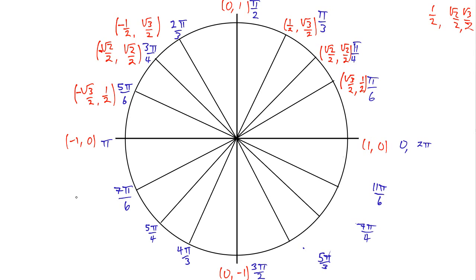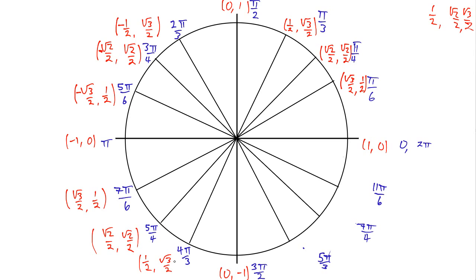In the third quadrant, for the pi over 6 point we have (square root of 3 over 2, 1/2). At the pi over 4 point — 5pi over 4 in this case — we have (square root of 2 over 2, square root of 2 over 2). And for 4pi over 3, it's a pi over 3 point, so x is 1/2 and y is square root of 3 over 2. But now we're in the third quadrant, so x and y both have to be negative — we need to make all these coordinates negative.